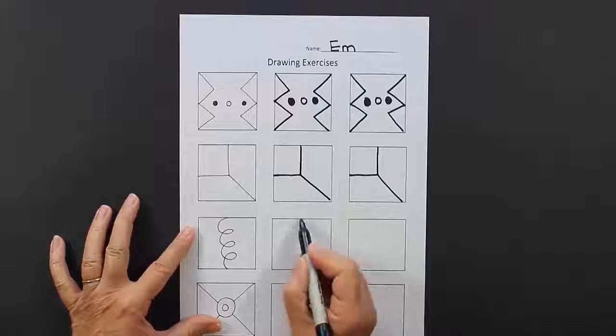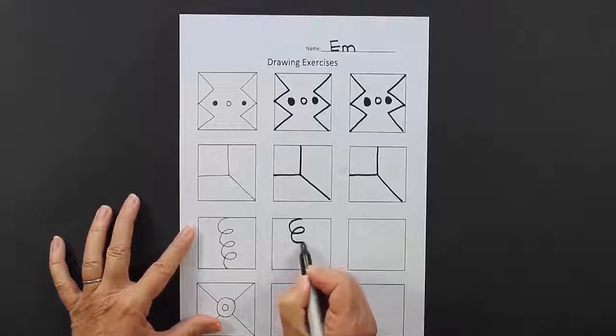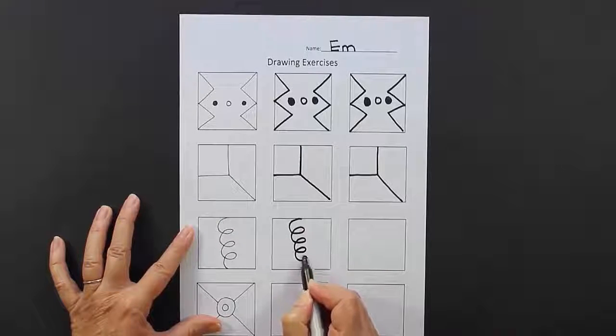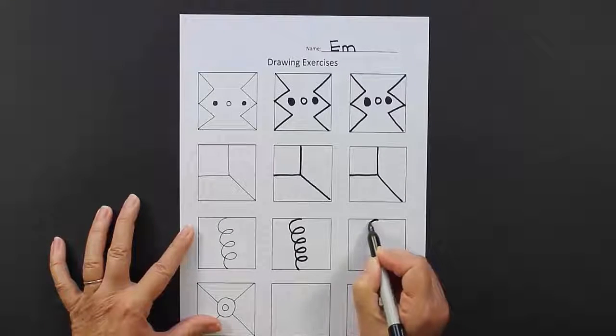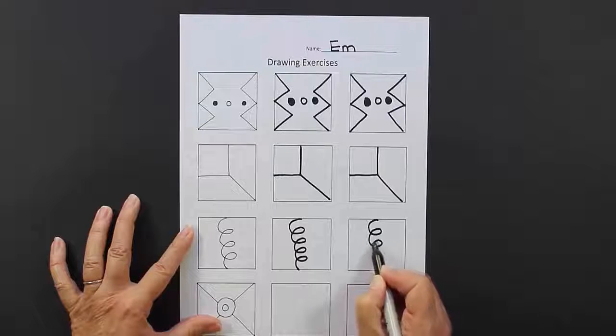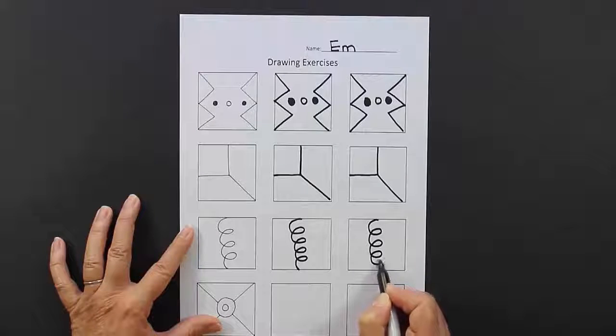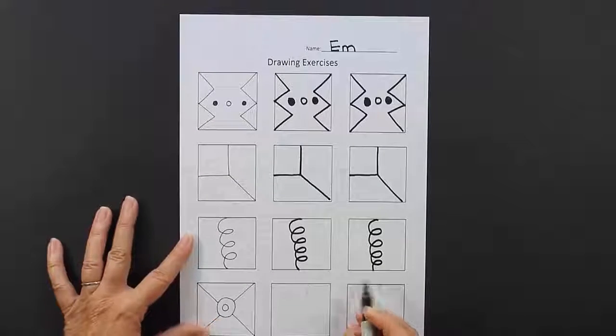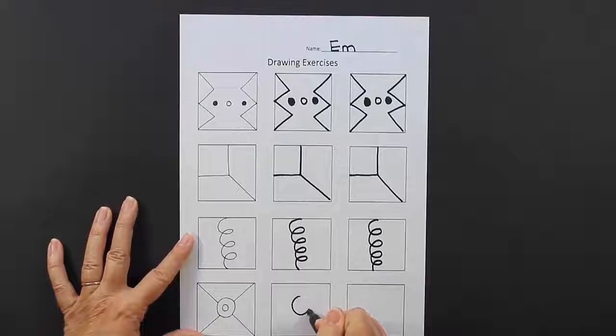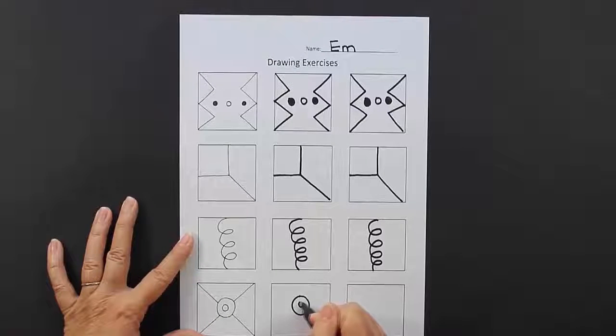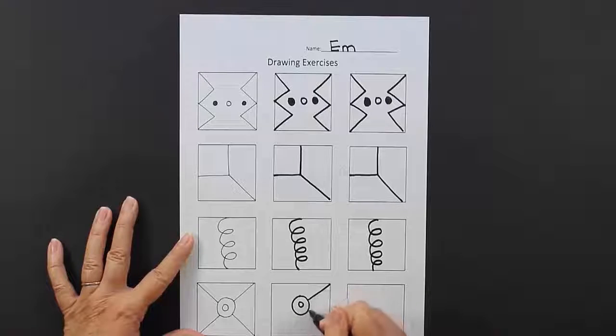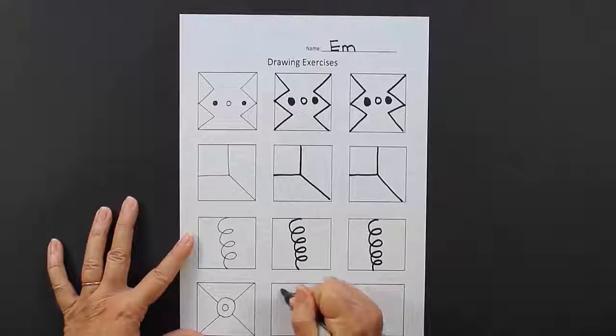The third box almost looks like a spring, some curly lines like that. Again, just try your best. Yours is not going to look exactly like the first sample, just like mine does not look just like the first sample.